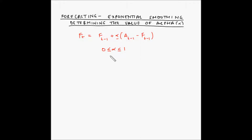So how do you determine the value of alpha? If the actual demand of the previous periods appears to be relatively stable over time, then we would select a relatively small value of alpha — that is, a value closer to 0. On the other hand, if the demand tends to fluctuate rapidly, as in the case of a new product experiencing tremendous growth, then we would select a relatively large value of alpha, closer to 1.